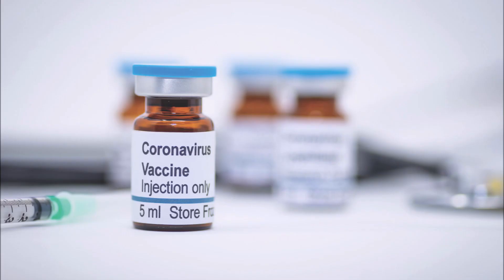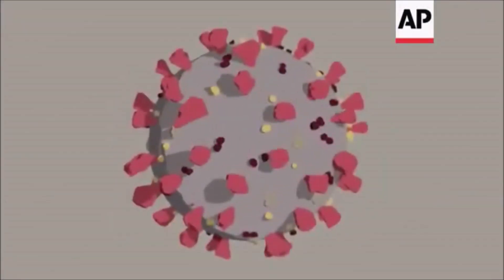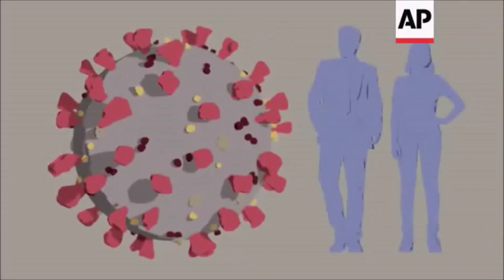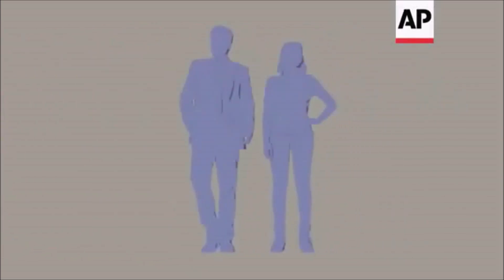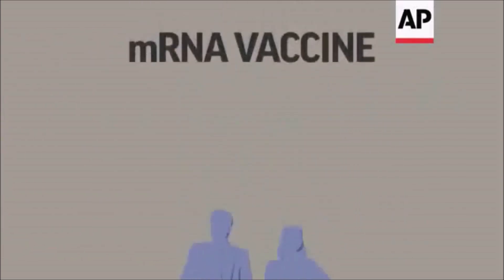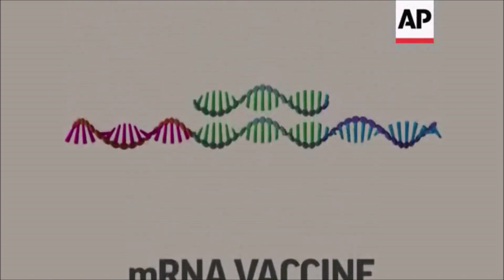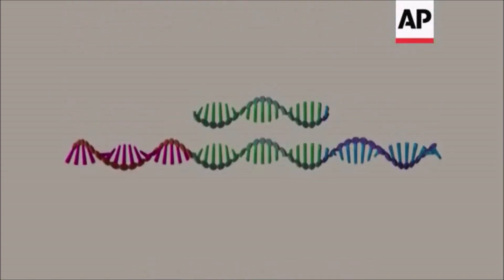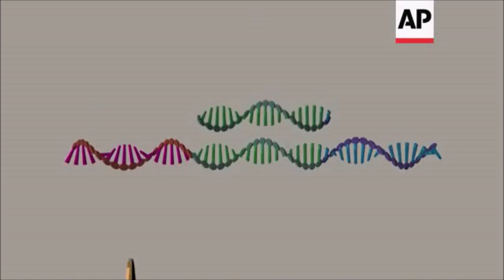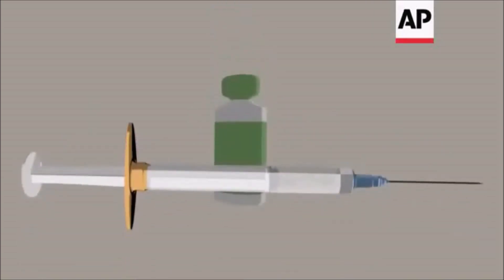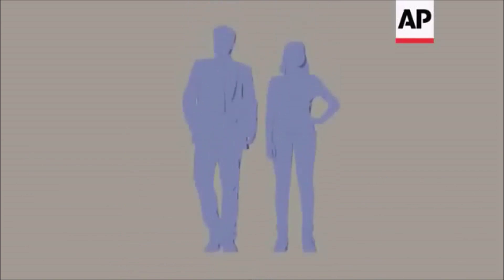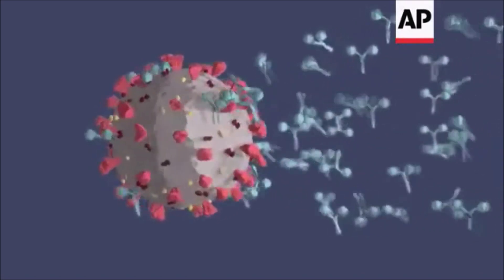Regarding the coronavirus vaccine, the target is a spiky protein that covers the new coronavirus. That protein lets the virus invade human cells. If the body's immune system recognizes the spike and blocks it, people won't get infected. One way is to copy a section of the virus's genetic code that instructs cells to make the spike protein, and stick that messenger RNA into a vaccine. The person's own cells will then make the harmless protein, and the immune system will spot the foreign proteins and make antibodies to attack them.